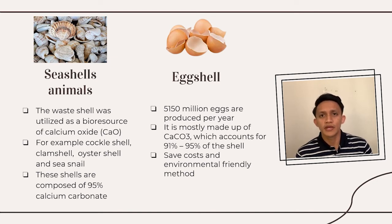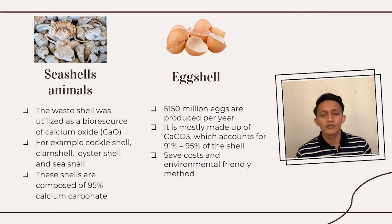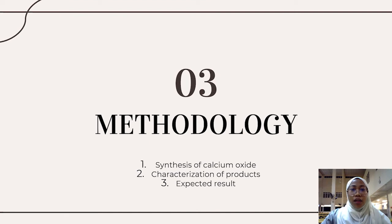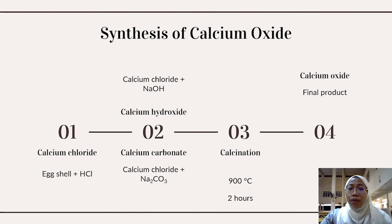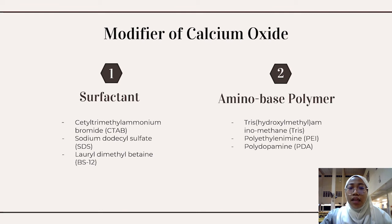Therefore, in this research, in order to produce calcium oxide for CO2 capture, we employed eggshell waste as a recycled source of raw material — an economical, safe, and environmentally friendly method. The synthesis begins with calcium chloride production, obtained by adding eggshell with hydrochloric acid. Next, calcium chloride forms calcium hydroxide with addition of sodium hydroxide, or calcium carbonate with addition of sodium carbonate. Then, calcium hydroxide or calcium carbonate undergoes calcination at 900 degrees Celsius for 2 hours to obtain calcium oxide as the final product.